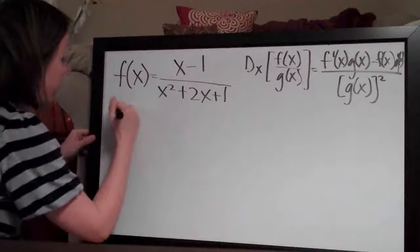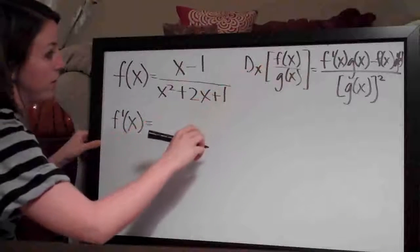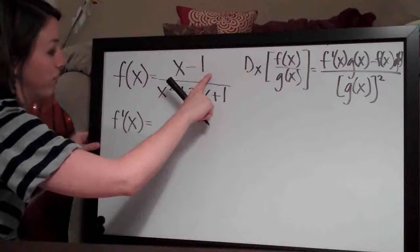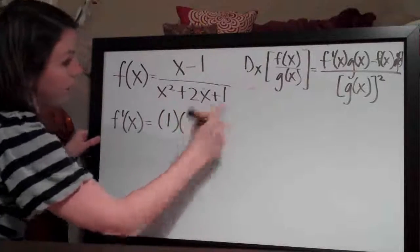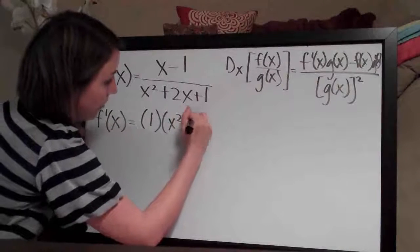So f'(x) equals, first thing, derivative of f(x) which is the top. The derivative of x-1 is just 1, and then times the bottom. So (x²+2x+1), we don't do anything to it,